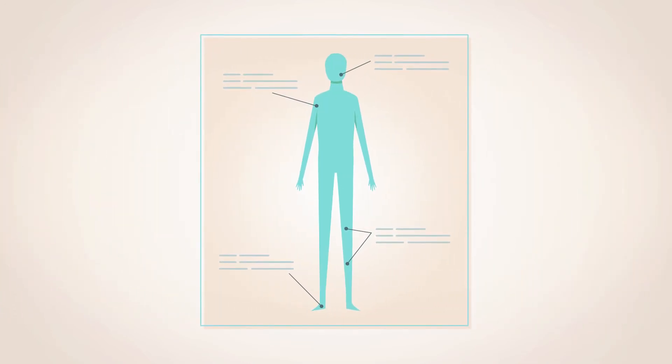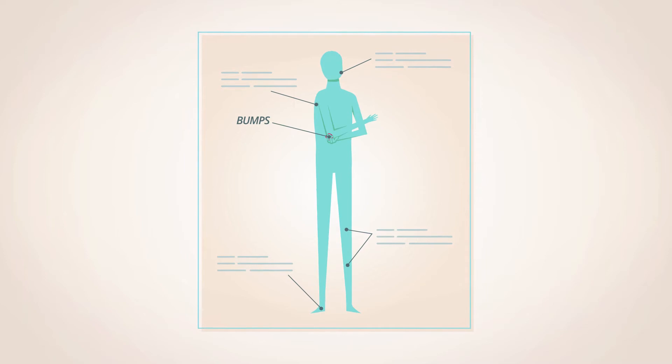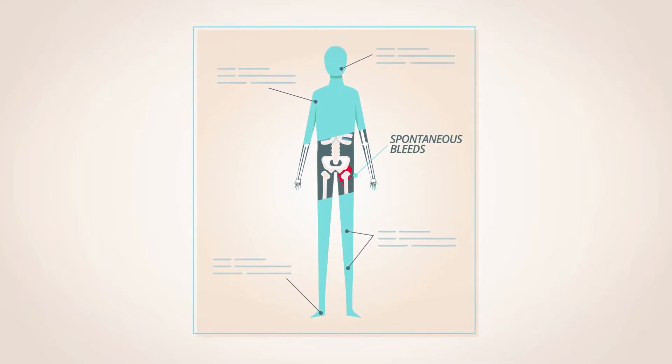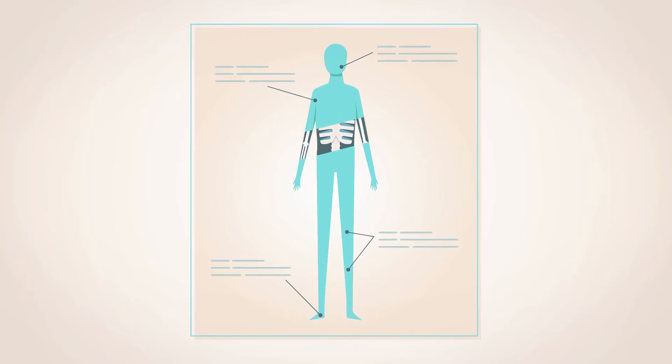You may not know that bleeds come in different forms. Some are the result of minor injuries like bumps or falls, and some are spontaneous, meaning they happen without an obvious cause. Most of these bleeds can be easily detected.